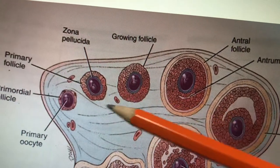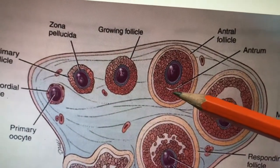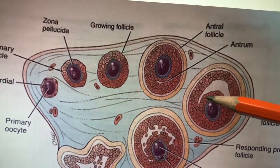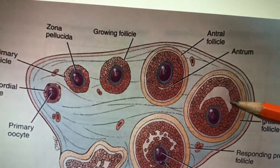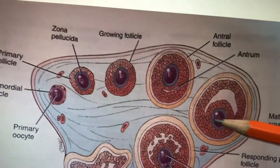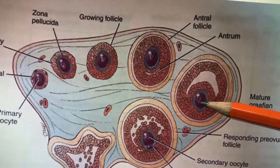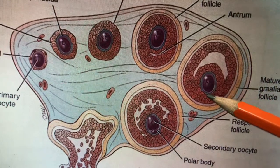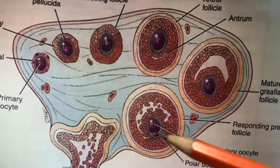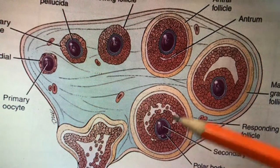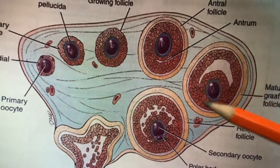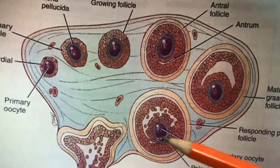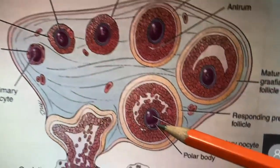These cells are called granulosa cells. The fluid is getting increased, so the antral cavity becomes bigger and bigger in size. It pushes the oocyte towards the periphery. Before the time of ovulation, the first meiotic division ends and the second meiotic division starts. So the first meiotic division ends, and you can see the secondary oocyte and the first polar body.